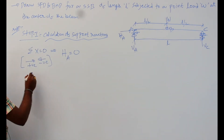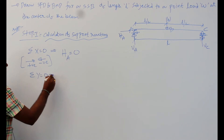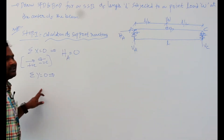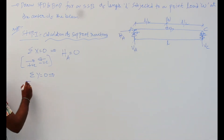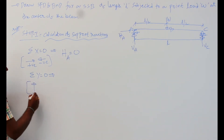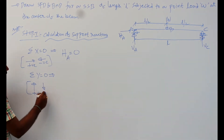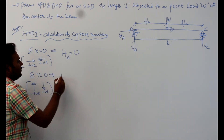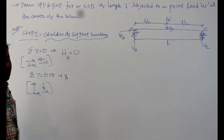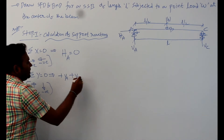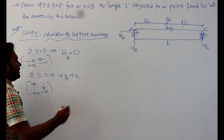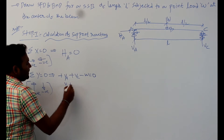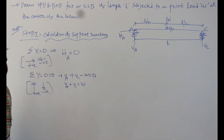Next, apply Sigma Y = 0 — the sum of all vertical forces equals zero. Upward forces are positive and downward forces are negative. VA is acting upward, so +VA; VC is acting upward, so +VC; W is acting downward, so −W = 0. Therefore, VA + VC = W.